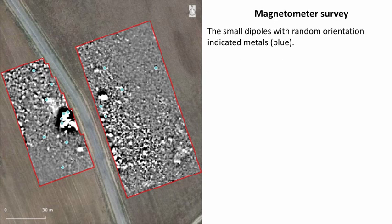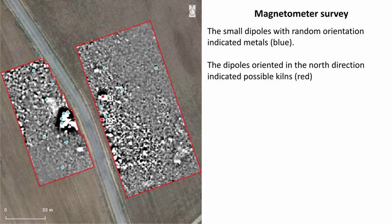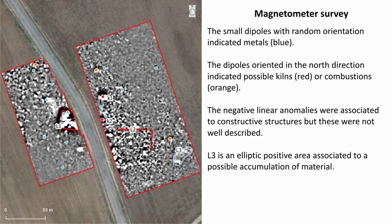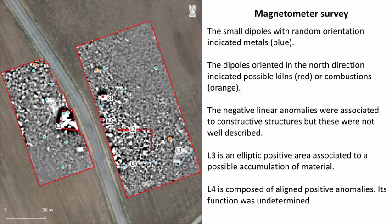The small dipoles with random orientation indicated metals in blue. The dipoles oriented in the north direction indicated possible kilns in red, or combustions in orange. The negative linear anomalies were associated to constructive structures, but these were not well described. L3 is an elliptic positive area associated to a possible accumulation of material. L4 is composed of aligned positive anomalies, and its function was undetermined.